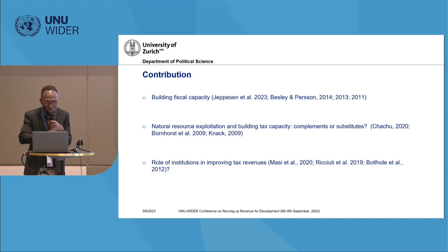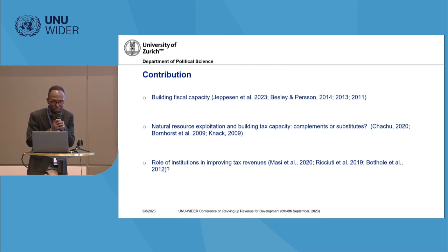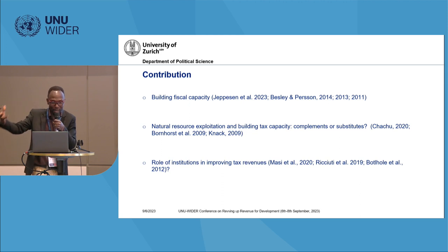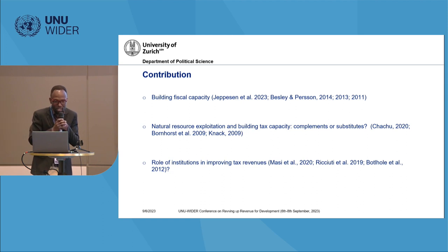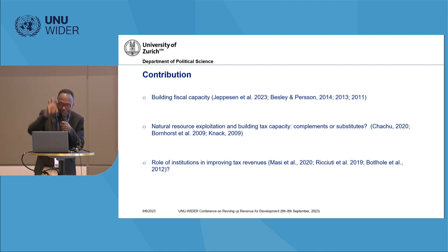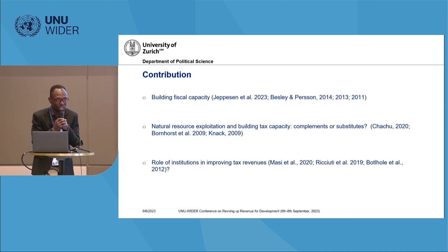In essence, we try to contribute to a number of strands in the literature: the literature on building fiscal capacity across resource-rich countries, the discussion on the relationship between natural resource dependence and building tax capacity — whether it's a complementary or substituted relationship. But more importantly, our work is situated squarely in trying to understand the role of quality of institutions in improving tax revenue outcomes, which many people in this room have contributed to — Roberto, Antonio, amongst others.